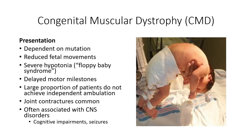Seeing as there is so much variability between these different conditions, it might seem surprising to see them grouped together. The common thread tying these conditions together is the remarkably early onset of muscular symptoms and muscle histology findings. Patients with congenital muscular dystrophy present with pronounced hypotonia very early in life. In many cases, reduced fetal movements have been noted in utero, suggesting that hypotonia begins prior to birth. This hypotonia continues in the neonate, and the term floppy baby syndrome has been adopted to describe the absence of muscle tone in this population.